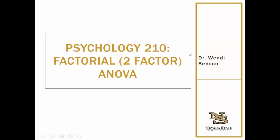Hello there. This lecture is all about two-factor analysis of variance, or a factorial ANOVA. In the last lecture, you learned about a single factor or one-way ANOVA. This is taking that a step further and doing two factors, or two independent variables, instead of just one independent variable like you learned about with the one-way ANOVA.